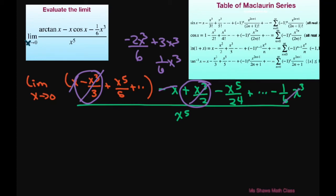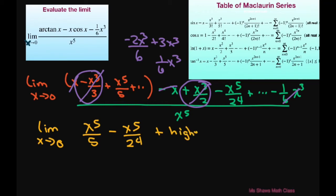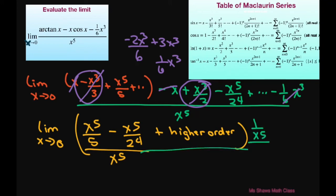So what we're left with is the limit as x approaches 0 of x to the power of 5 divided by 5 minus x to the power of 5 divided by 24, plus all your higher order terms, divided by x to the power of 5. Basically what we're doing is dividing each piece by x to the 5th — multiply numerator and denominator by x to the 5th — and that gives you the limit as x approaches 0 of 1 divided by 5 minus 1 divided by 24, because the higher order terms go away.